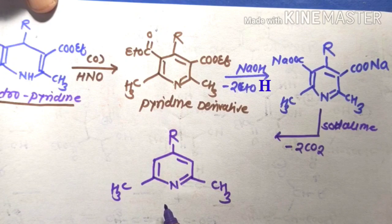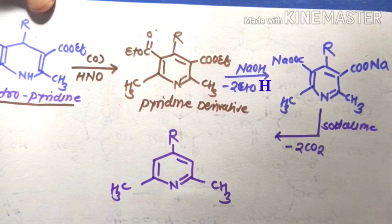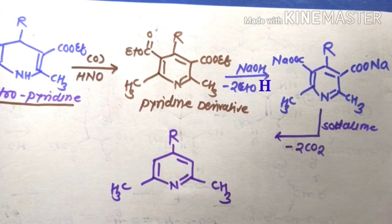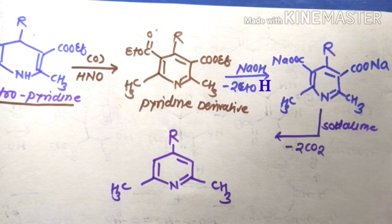This completes the Hantzsch synthesis. It is a four-component (tetracomponent) condensation reaction involving 2 mol of ethyl acetoacetate, 1 mol of aldehyde, and 1 mol of ammonia, giving substituted pyridine as the final product.